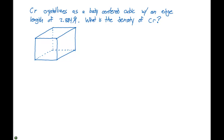Now that we know the unit cells and the metallic structures, we can use these to calculate things such as density. Chromium crystallizes as a body-centered cubic with an edge length of 2.884 angstroms. What is the density of chromium?